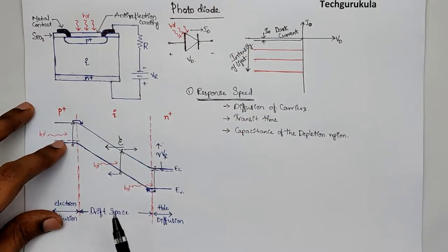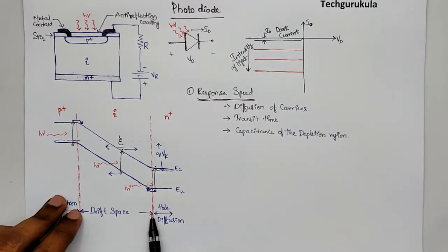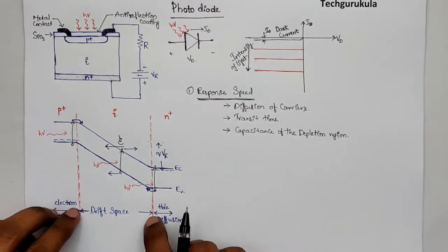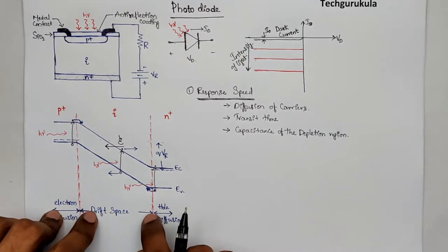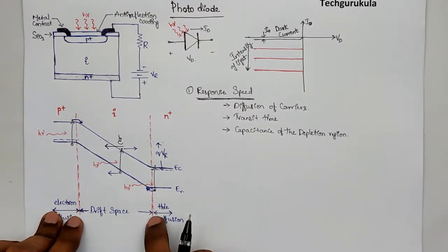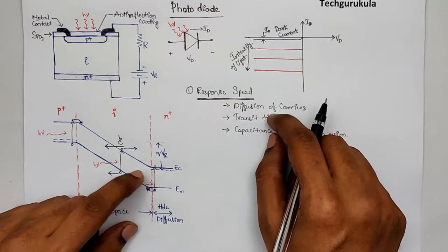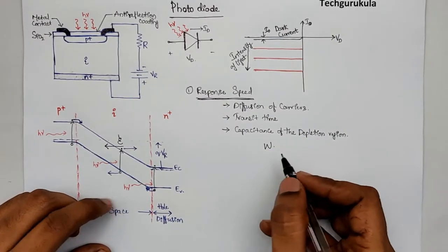Coming to transit time, it is the time an electron or hole takes to traverse the electric field region at drift velocity, which depends on the width of that region. The capacitance of the depletion region — which has positive charges on the N side and negative charges on the P side — also depends on the distance between charges. Hence, both transit time and depletion capacitance depend on the depletion width.